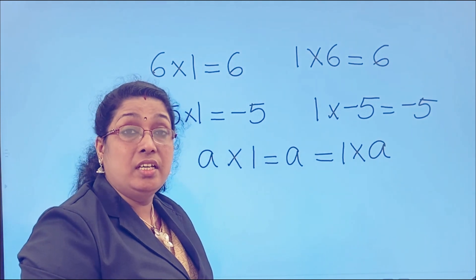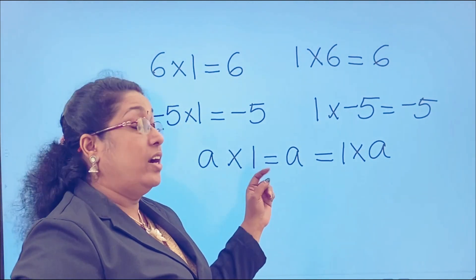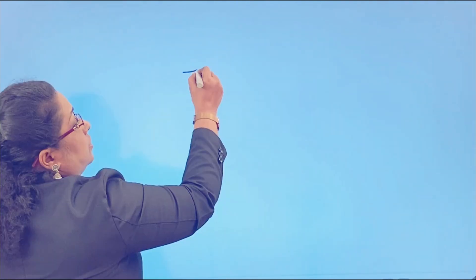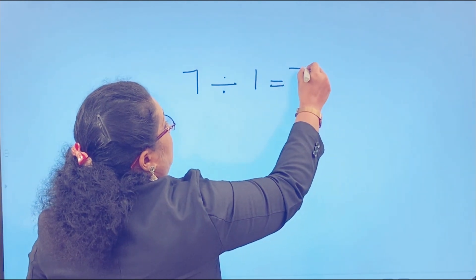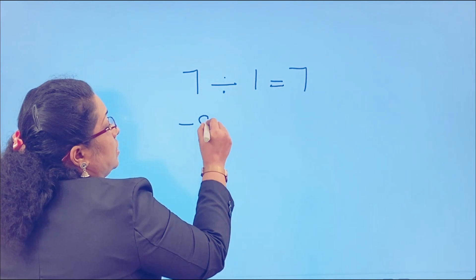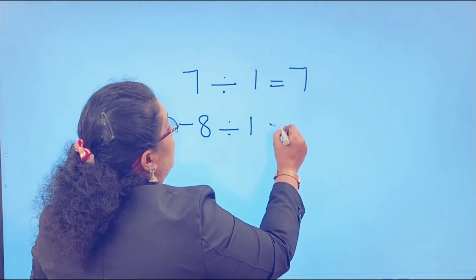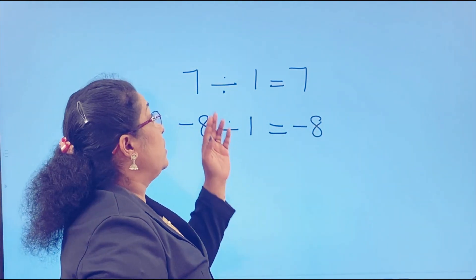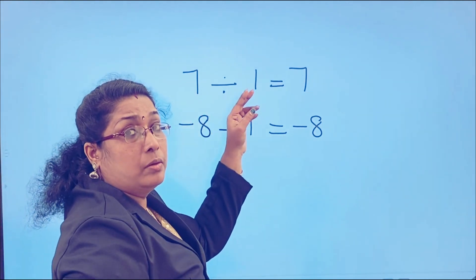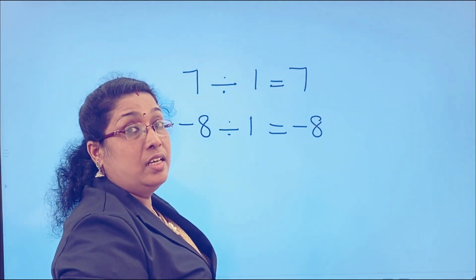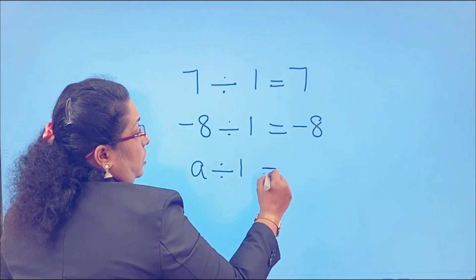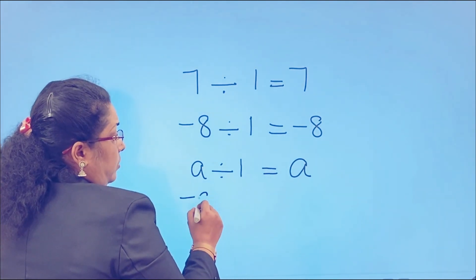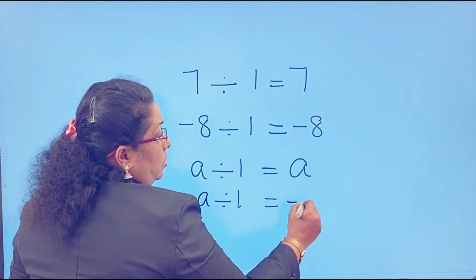Remember: 0 is the additive identity of integers, and 1 is the multiplicative identity of integers. Also, if you divide any integer by 1, what answer do we get? 7 divided by 1, the answer is 7. Negative 8 divided by 1, it is negative 8. So if we divide any number by 1, we get the same number itself. That is, if A is an integer, then A divided by 1 is equal to A, and negative A divided by 1 is equal to negative A.